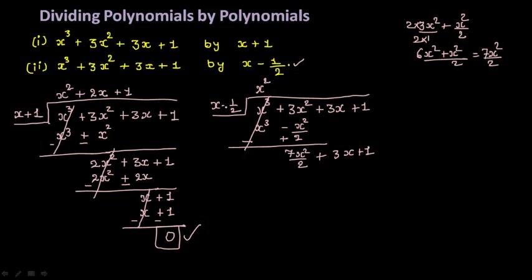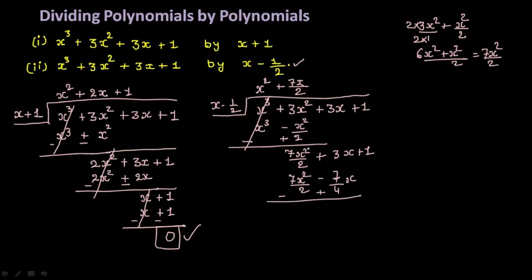Now you need 7x square by 2. What do you multiply with x to get that? Directly, x into x square with 7 by 2 remaining gives 7x square by 2 — so put 7x by 2 in the quotient. Then 7x by 2 multiplied by minus 1 by 2 gives minus 7x by 4. Change the sign again: 7x square by 2 cancels, and now you need to add 3x plus 7x by 4. Find the LCM: 12x plus 7x by 4 gives 19x by 4.